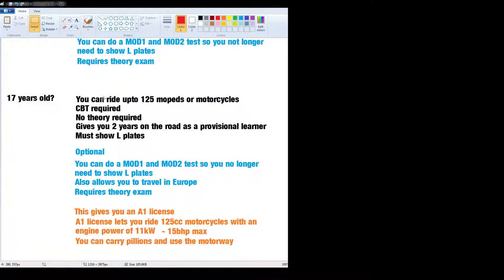So you're 17. You can do your CBT again, exactly the same. You can ride up to a 125 now though, 125 moped or motorcycle. CBT required, no theory. It gives you two years on the road as a provisional learner, must show L-plates. Now, at this point you can do a Mod 1 and Mod 2 test so you no longer need to show L-plates. Nobody likes L-plates. Which allows you to travel in Europe as an added bonus.